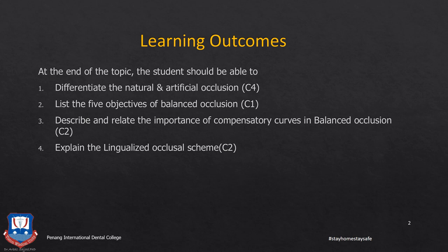We will study this based on the following outcomes. First, you should be able to differentiate between natural and artificial occlusion in complete dentures. Second, you should be able to list the five objectives of balanced occlusion, what balanced occlusion is, the factors that affect it, and its various objectives. Third, you should be able to describe and relate the importance of various compensating curves in balanced occlusion, mainly the curve of Spee, curve of Wilson, curve of Monson, reverse curve, Pleasure's curve, etc. Finally, you should have some idea about what a lingualized occlusal scheme is.